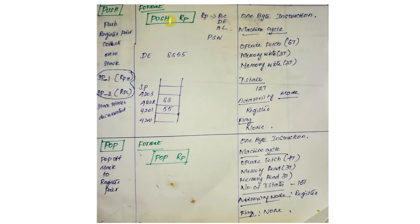For machine cycles, PUSH has an opcode fetch cycle, then two memory write cycles where the register pair data is written to the stack. The stack pointer is decremented before each write. In an example, if DE contains 88 and 55, after PUSH DE the stack pointer decrements and stores the data. PUSH RP uses register addressing mode. No flag is affected.